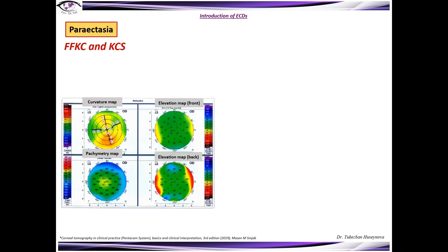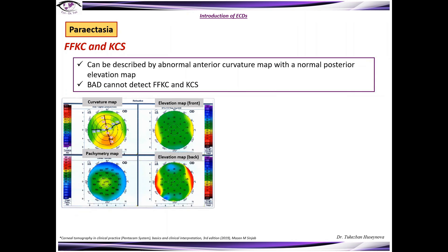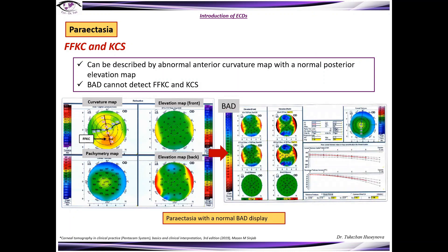Paraectasia includes form-fruste keratoconus and keratoconus suspect. These can be described by an abnormal anterior curvature map with a normal posterior elevation map. The Belin-Ambrósio display cannot detect form-fruste keratoconus and keratoconus suspect — as you can see, the display looks absolutely normal. However, the D-value is 1.96, colored yellow, whereas the D-value normally should be less than 1.45.